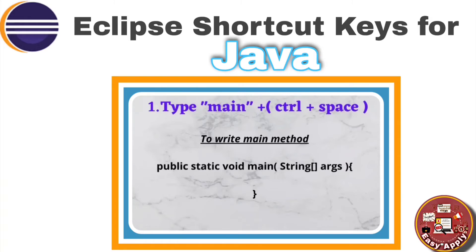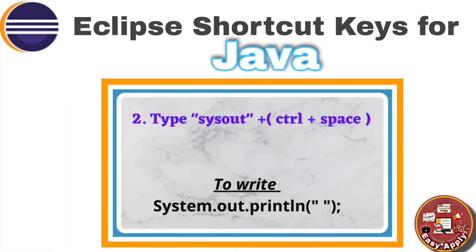The next shortcut key is for System.out.println, which is used to print a statement. Instead of typing the complete sentence, you can type 'out' plus Ctrl+Space and it will be written automatically. This will also save your time and you can move on to write the next code.